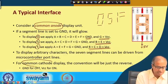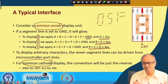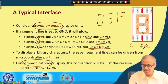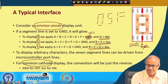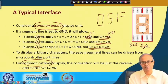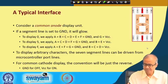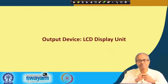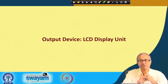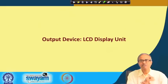For a common cathode display, the convention is reversed: the common terminal connects to ground, and to display a character you connect the active segments to VCC (5V). This is how you interface a 7-segment LED display unit to a microcontroller. Now let us move on to the liquid crystal display (LCD) unit, which has become very popular today.